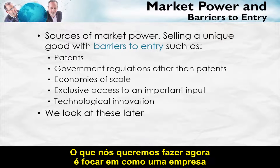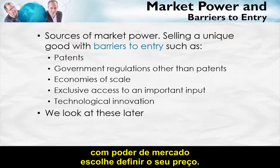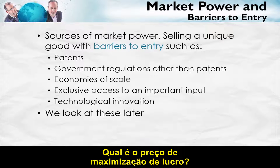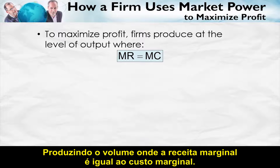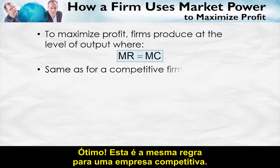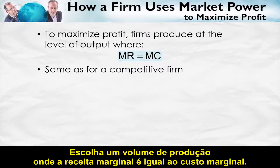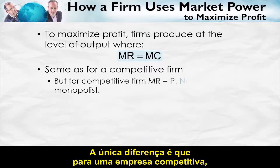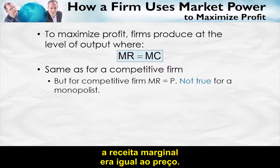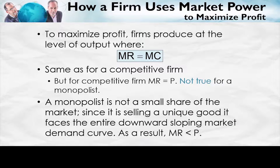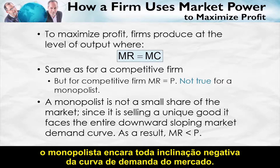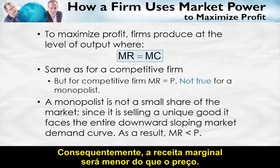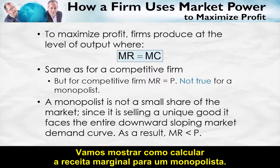What we want to do now is focus on how a firm with market power chooses to set its price — the profit maximizing price. A monopolist maximizes profit by producing at the level of output where marginal revenue equals marginal cost. That's the same rule as for a competitive firm. The only difference is that for a competitive firm, marginal revenue was the same as price — and that's not true for a monopolist. Since it's selling a unique good, the monopolist faces the entire downward sloping market demand curve. As a result, marginal revenue is going to be less than price.